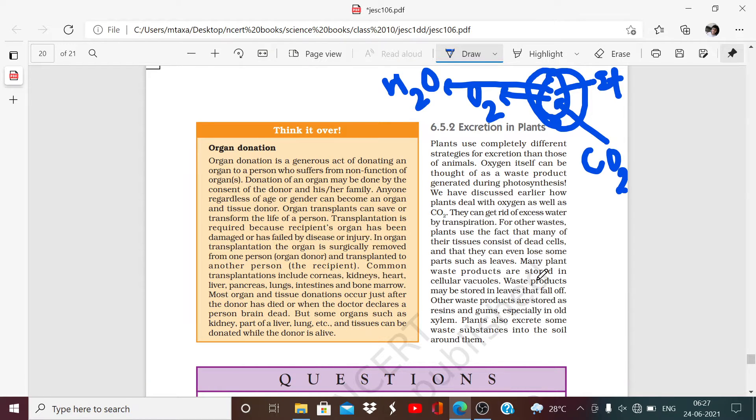Other waste substances in plants are stored in leaves. Other waste products are stored in the form of resins and gums, especially in old xylem. Plant waste substances, we have told that the roots are attached with the soil, so if it is attached with the soil then the waste substances are excreted. So I hope that excretion in plants is clear now. Thanks for watching the video.